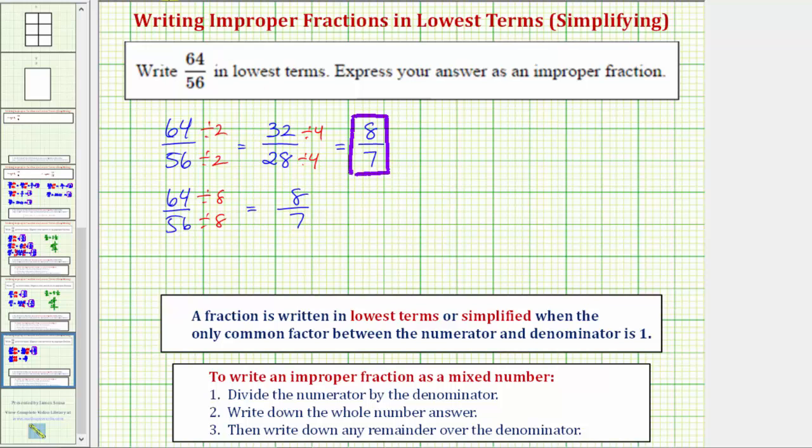Now if we have a difficult time determining common factors or the greatest common factor, we can also simplify the fraction using the prime factorization of 64 and 56. Let's also show this method. Using this method, the first step is to determine the prime factorization of 64 and 56.